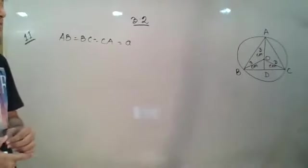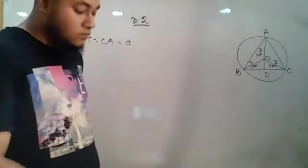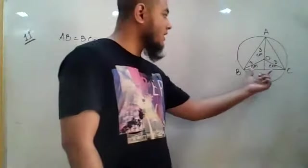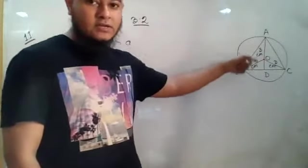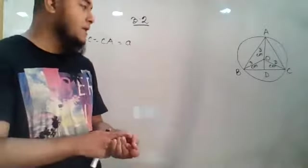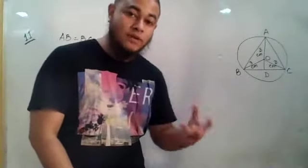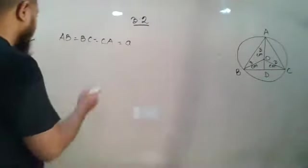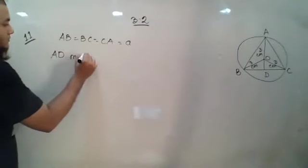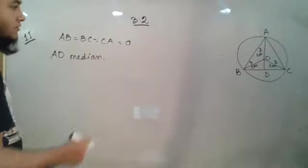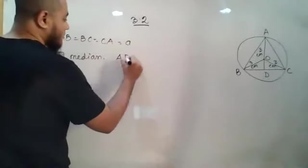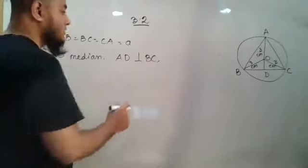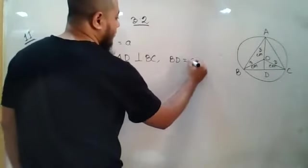In an equilateral triangle we have an advantage over other triangles. If you draw a median — say we find the midpoint of side BC and connect it to the opposite vertex A — then AD will be a median. In an equilateral triangle this median will also be perpendicular to the opposite side, so AD is perpendicular to BC.